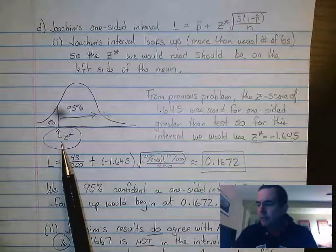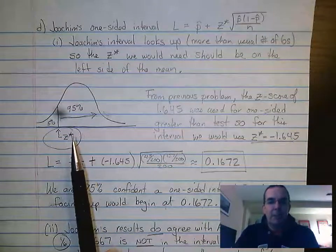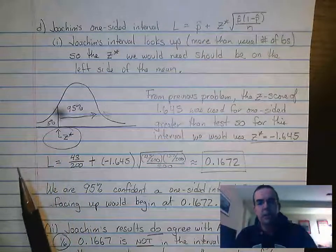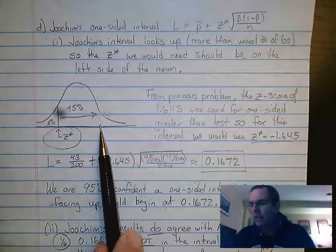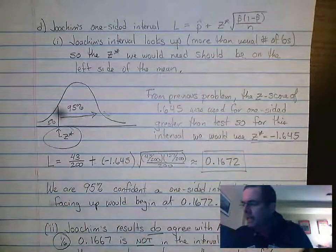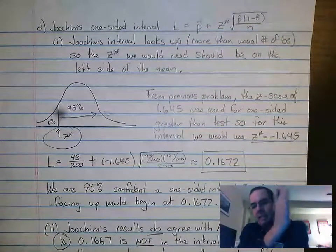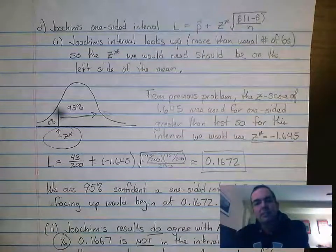So we had to figure out first for part one, what is that z star? Well, it really is basically the mirror image of what we just did in the previous question in part C, where we had the 1.645 over here. We're going to use that same z score, but we're going to look at it from the opposite side, from the negative side. So negative 1.645 is my z star.